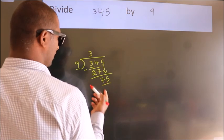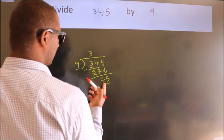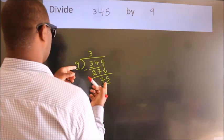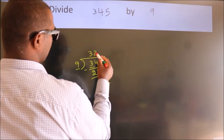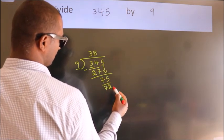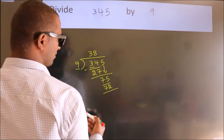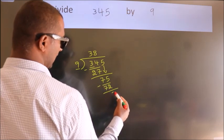So, 75. A number close to 75 in 9 table is 9 eights, 72. Now we subtract, we get 3.